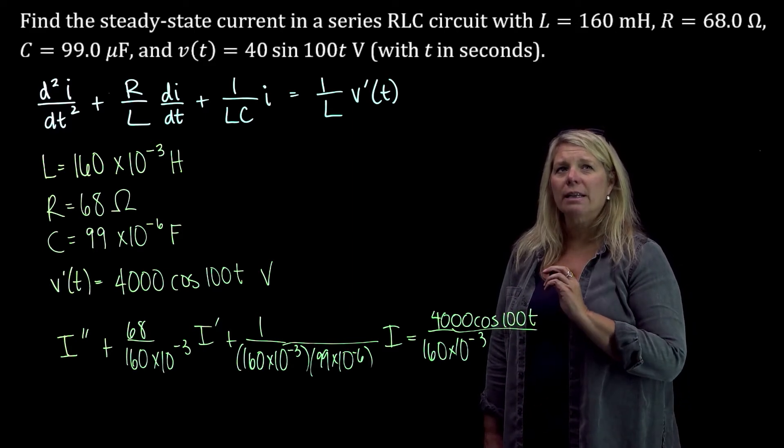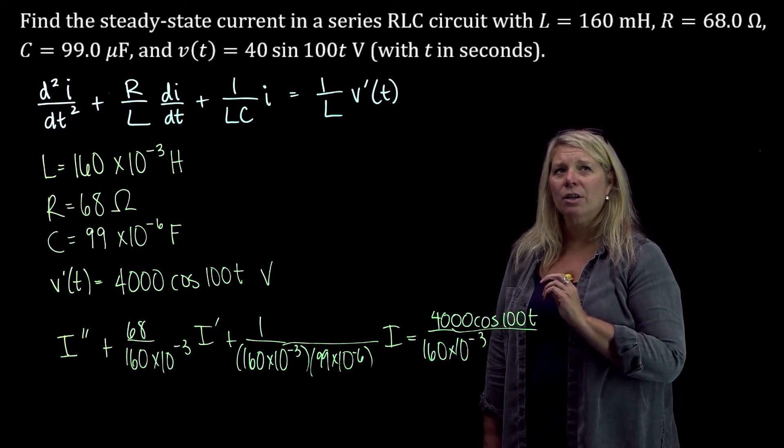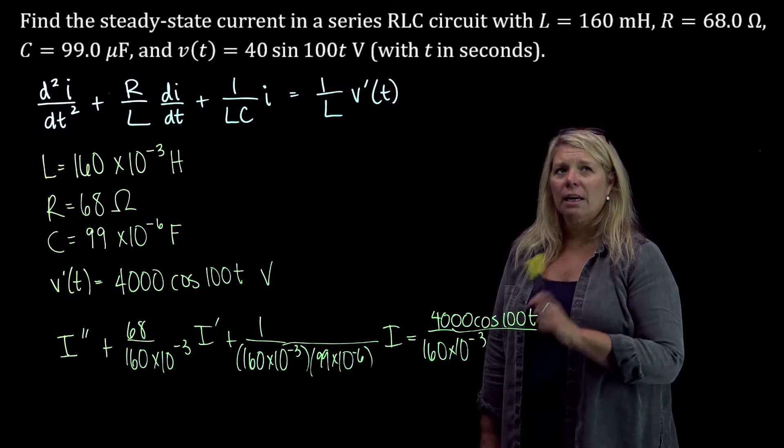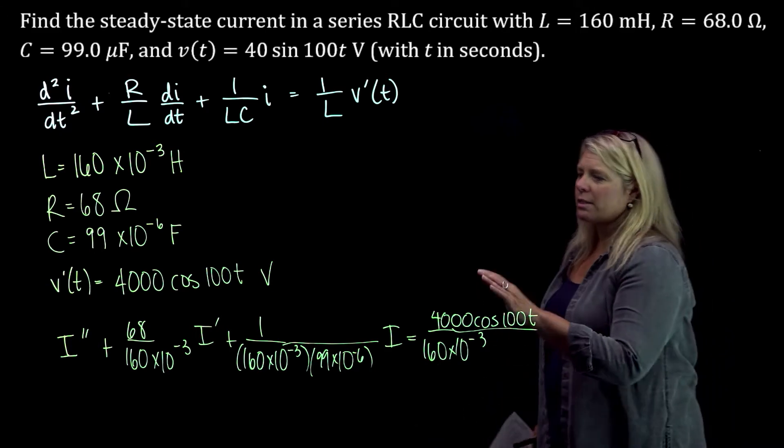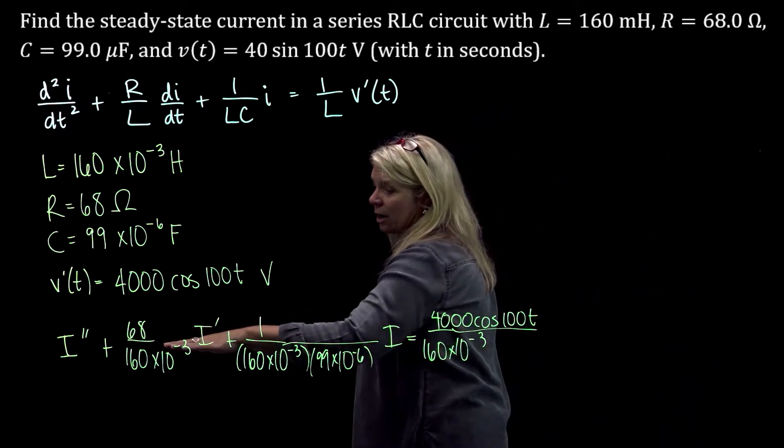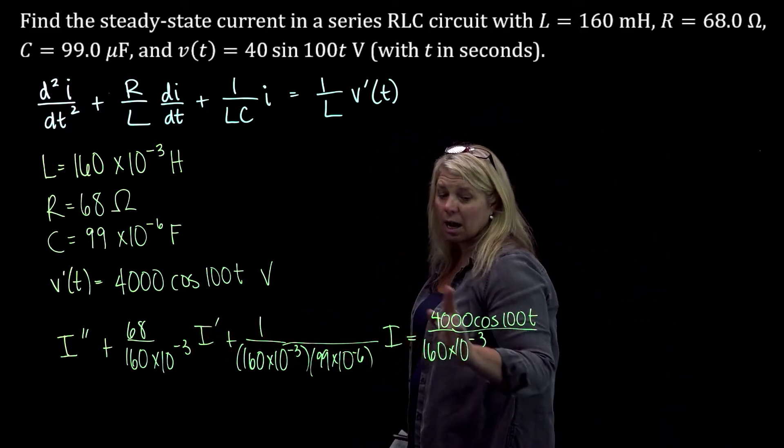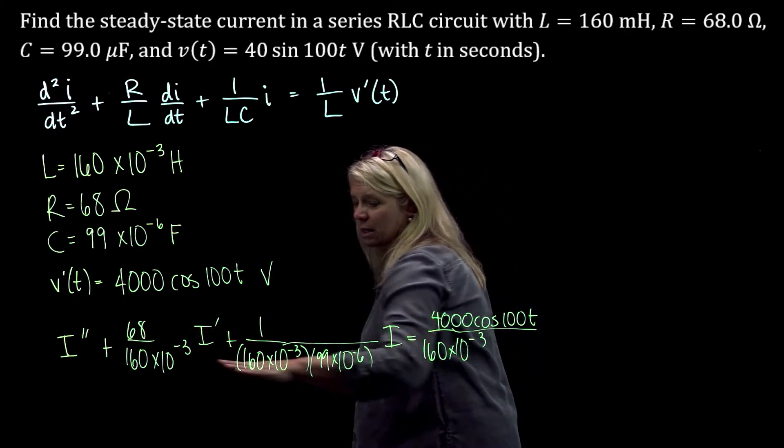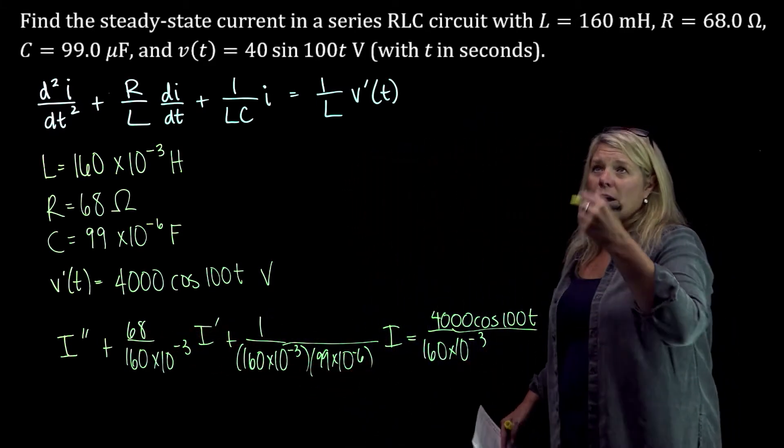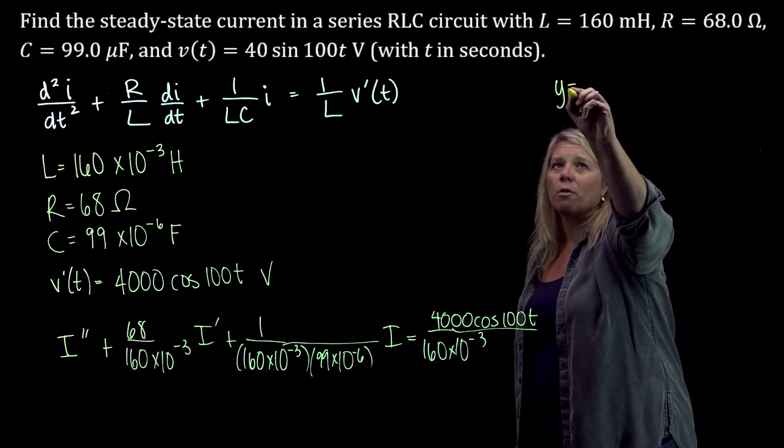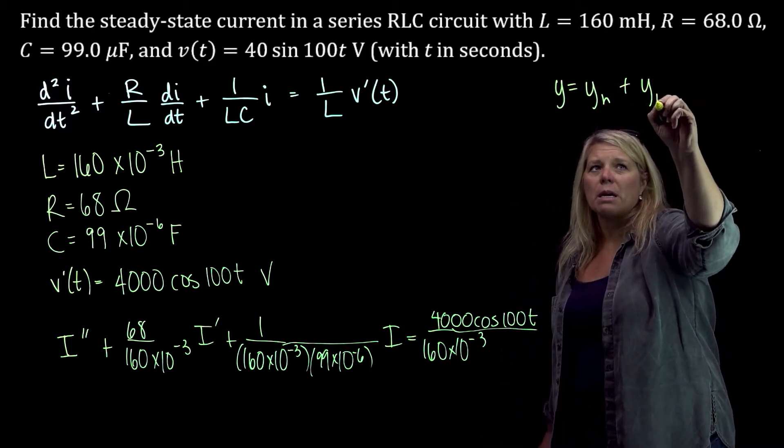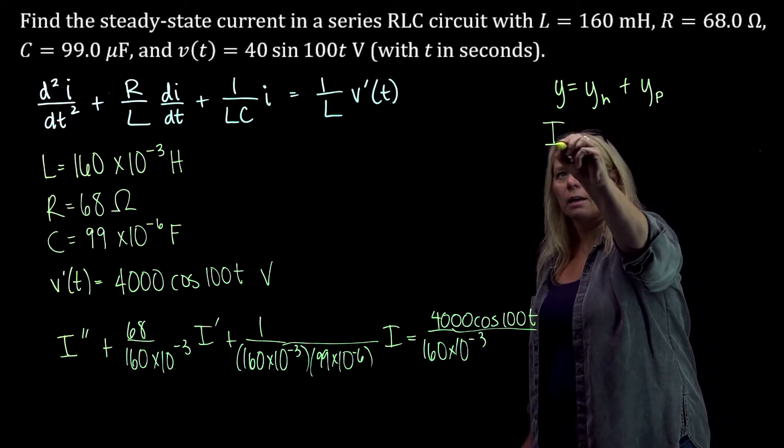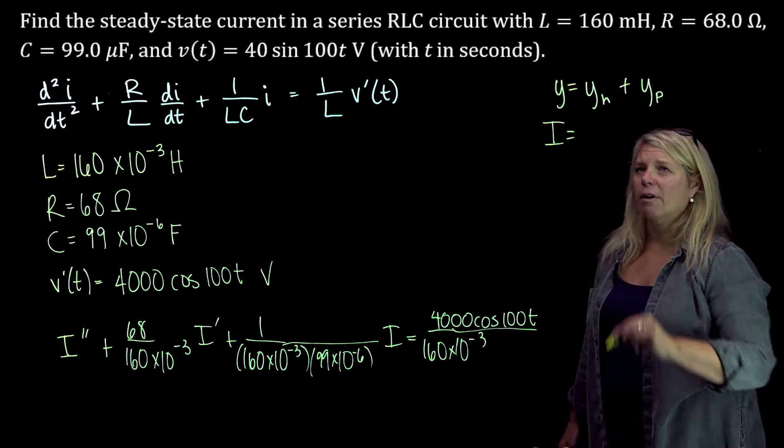do that without necessarily turning through some calculations with a lot of ugly coefficients. All right. So it's asked us to find the steady state current in this RLC circuit. All right. So in general, when we solve a second-order linear non-homogeneous differential equation with constant coefficients, we know that our solution would be of the form y equals y_h, the solution for the homogeneous part, plus y_p. Here we have I instead of y for our dependent variable.